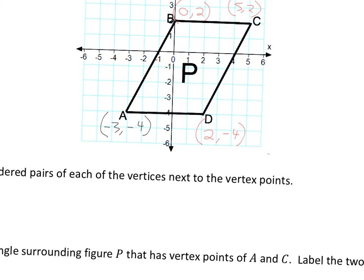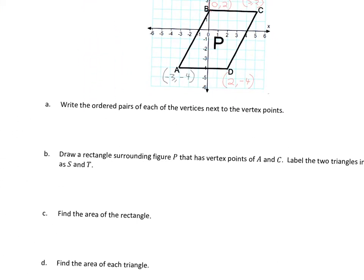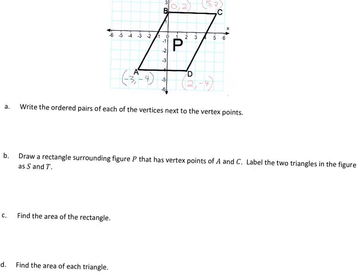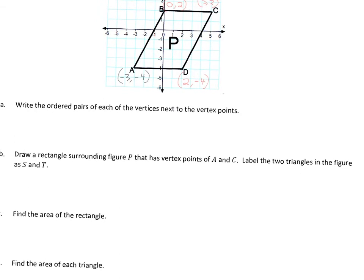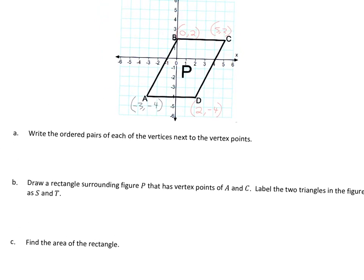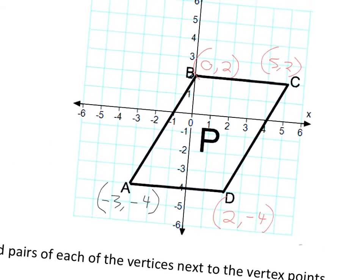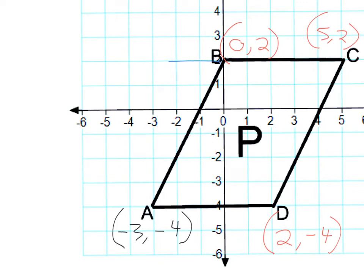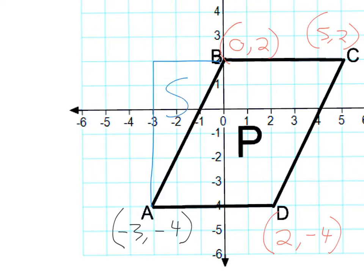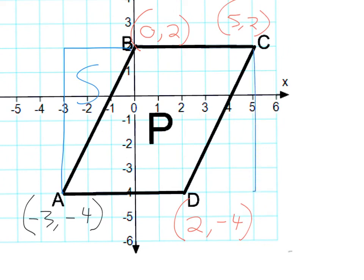That was 3A. Next it wants us to draw a rectangle surrounding figure P that has vertex points A and C, and label the two triangles in the figure as S and T. So it wants A and C as vertex points and we're making a rectangle — it's going to have to go like this. So there's one rectangle. We're going to label that S, and then this one over here will be T.